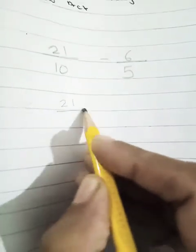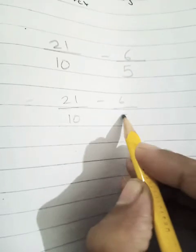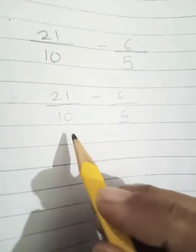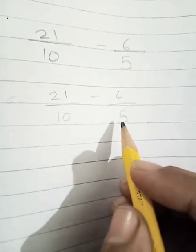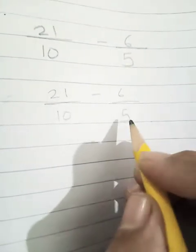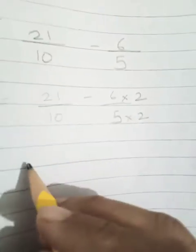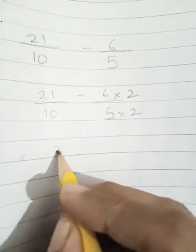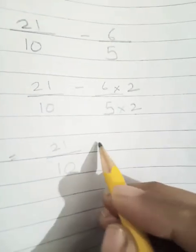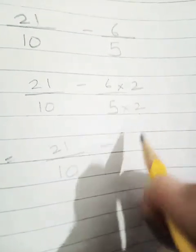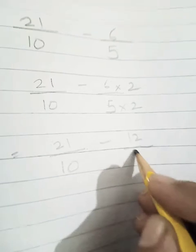We will copy down 21 upon 10 minus 6 upon 5. Now tell me which one is bigger denominator? Yes 10 is the bigger one. So we will make 5, 10. How? Multiplying by 2. So this term we will multiply by 2. Now in the next step 21 upon 10 will come down as it is. Minus sign will come down as it is. Then 6 times 2 is 12 upon 5 times 2 is 10.